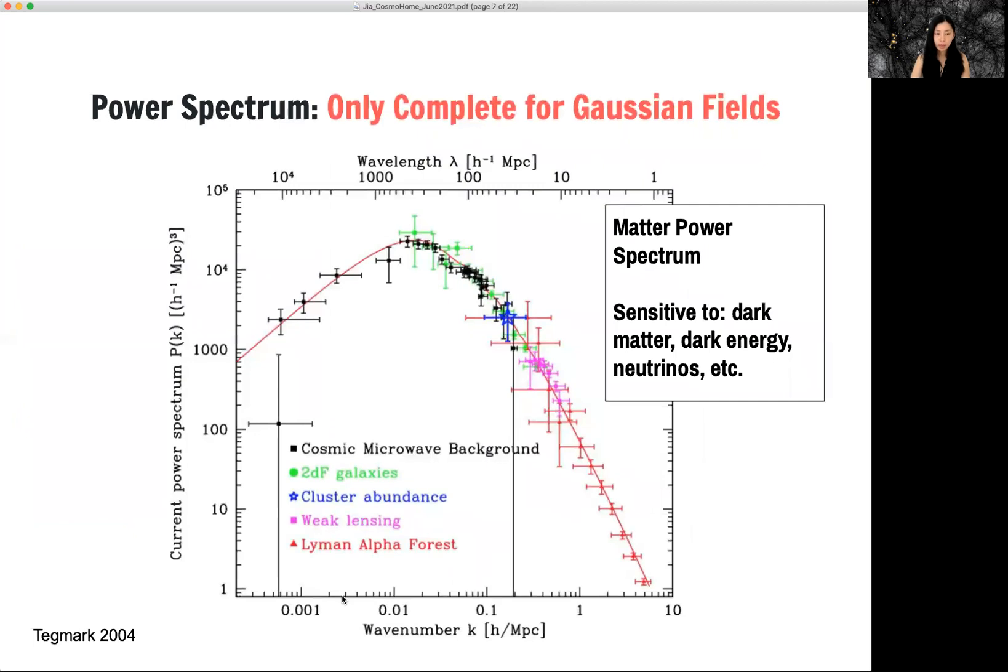So usually we like to constrain cosmology using the power spectrum. It is sensitive to many parameters that we're interested in, including dark matter, dark energy, and the neutrinos.